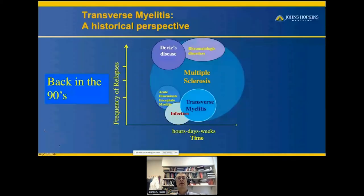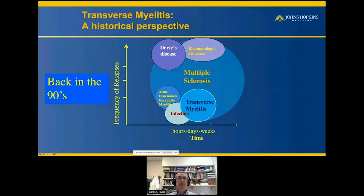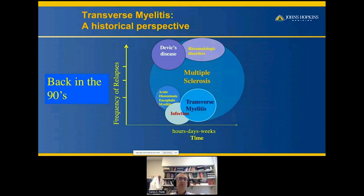Back in the 90s, when Sandy Segal and many people working in the Transverse Myelitis Association were active, we actually put the term transverse myelitis frequently in the basket of multiple sclerosis. There were other diagnoses like acute disseminating encephalomyelitis, and Devic's disease — at that time a rare disease presenting with spinal cord inflammation as well as optic neuritis and rheumatological disorder. That was basically the spectrum of what was known then as transverse myelitis.